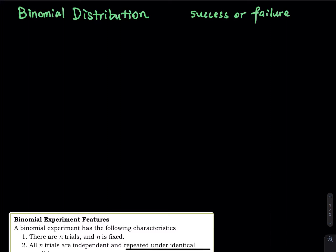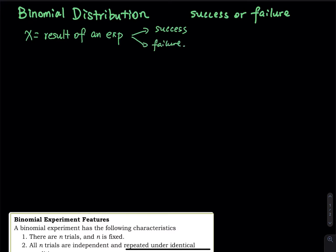When you run a binomial experiment, you get two results: either a success or a failure. X is the result of an experiment — either a success or a failure. In binomial distribution, the probability of success is P, and the probability of failure is Q, which is one minus P. They must add up to 100%. So if the probability of success is 70%, the probability of failure is 30%.